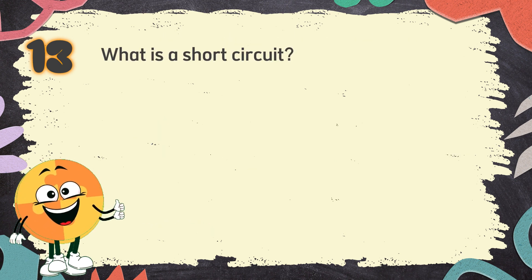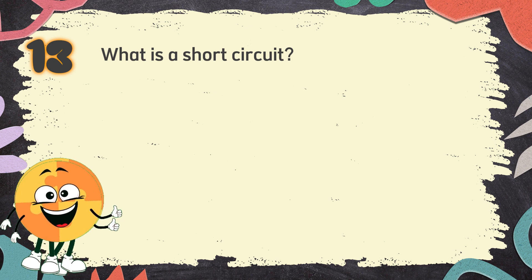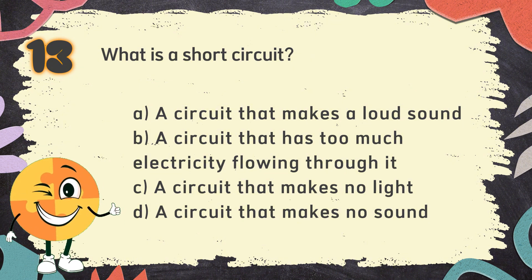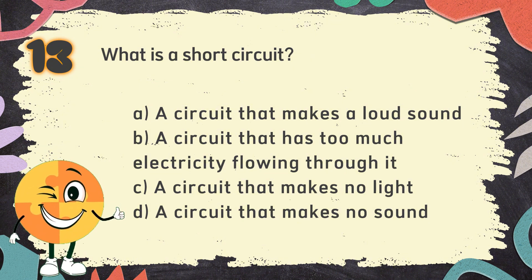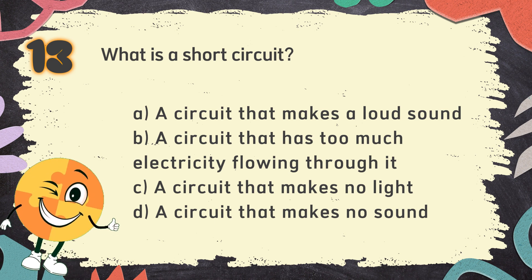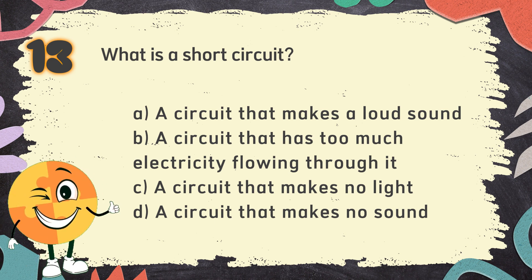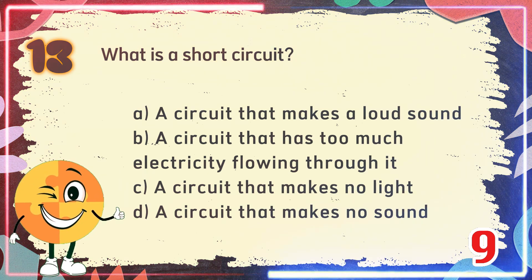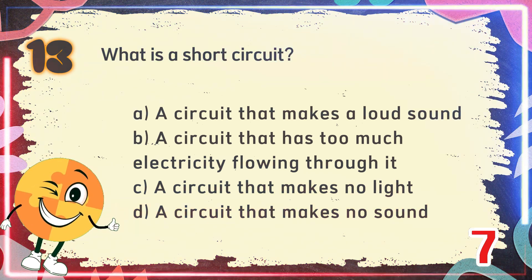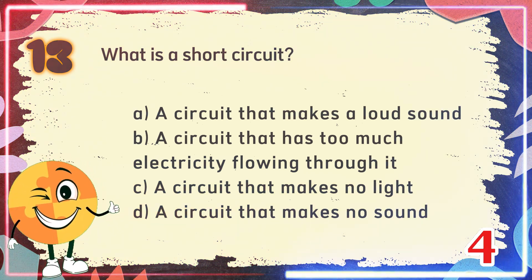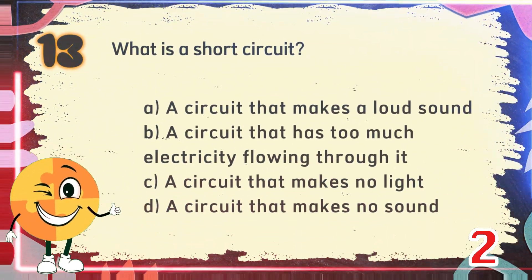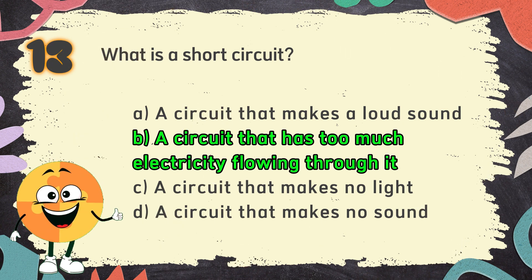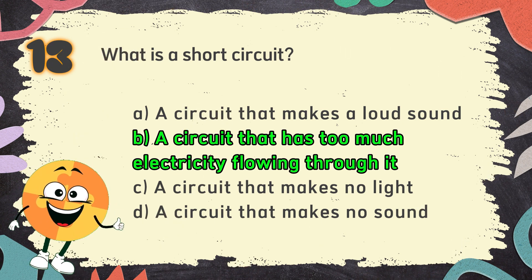Number 13. What is a short circuit? The choices are: A. A circuit that makes a loud sound, B. A circuit that has too much electricity flowing through it, C. A circuit that makes no light, D. A circuit that makes no sound. The correct answer is B. A circuit that has too much electricity flowing through it.